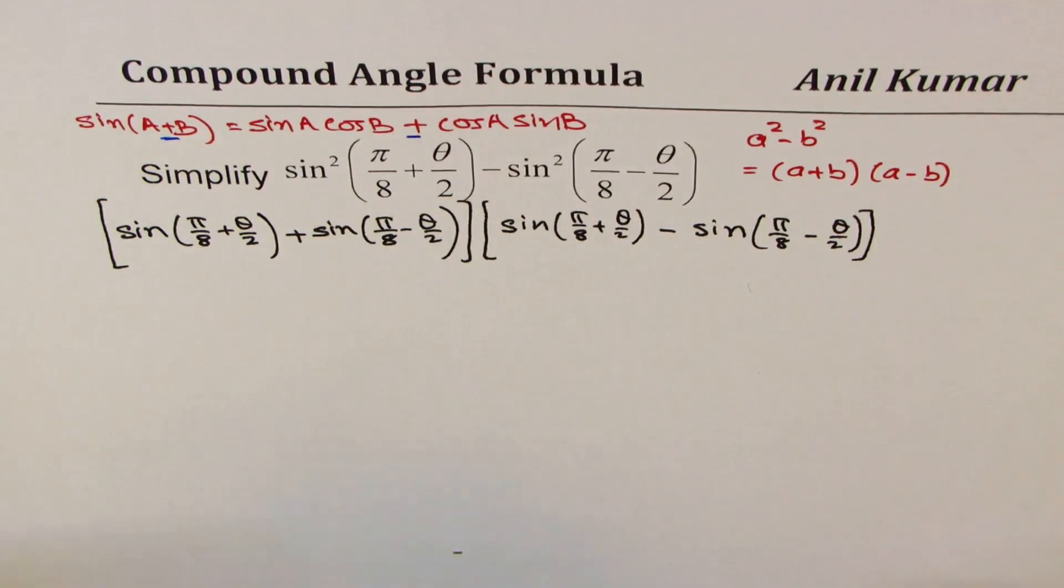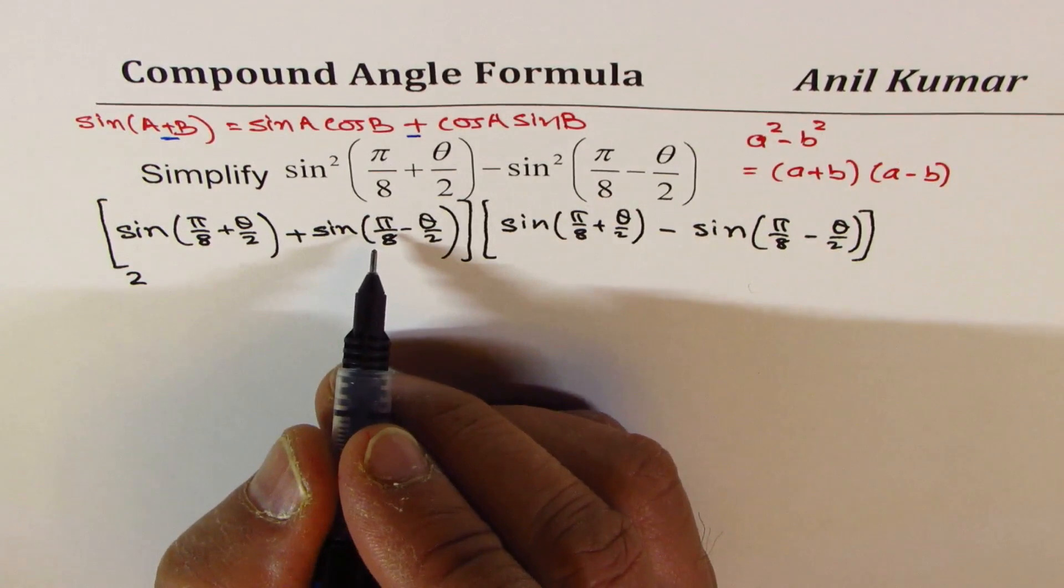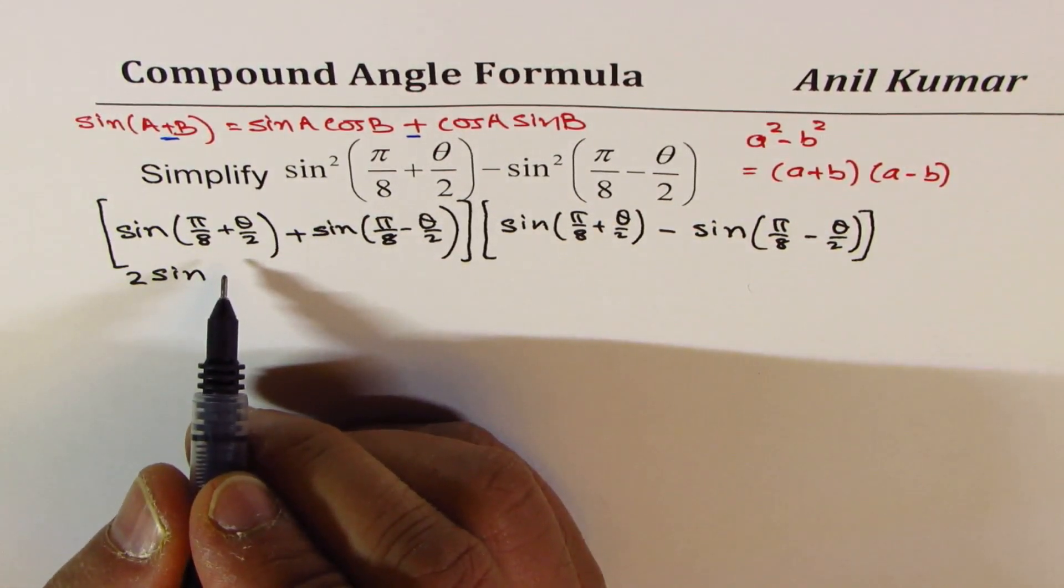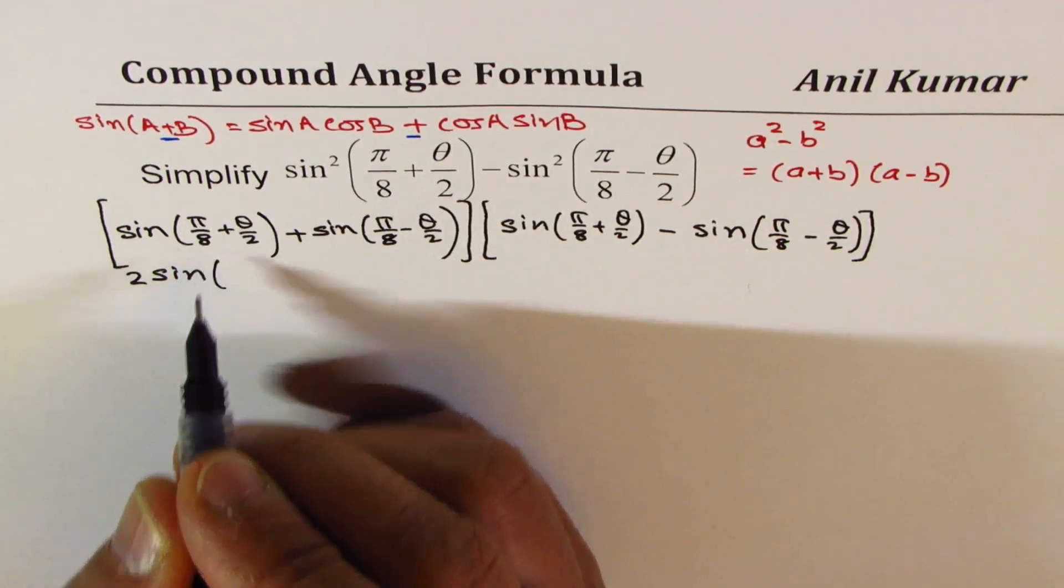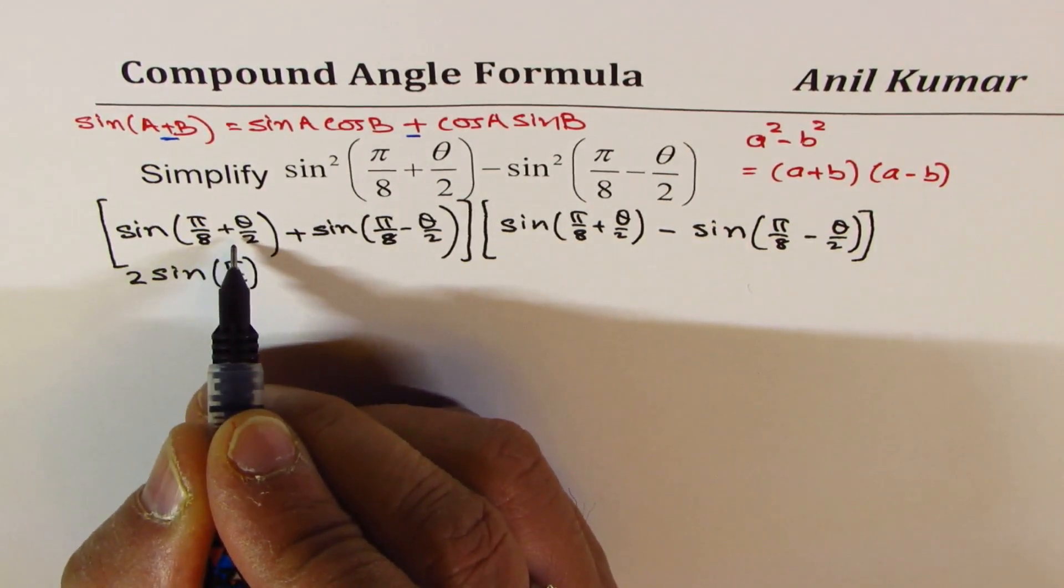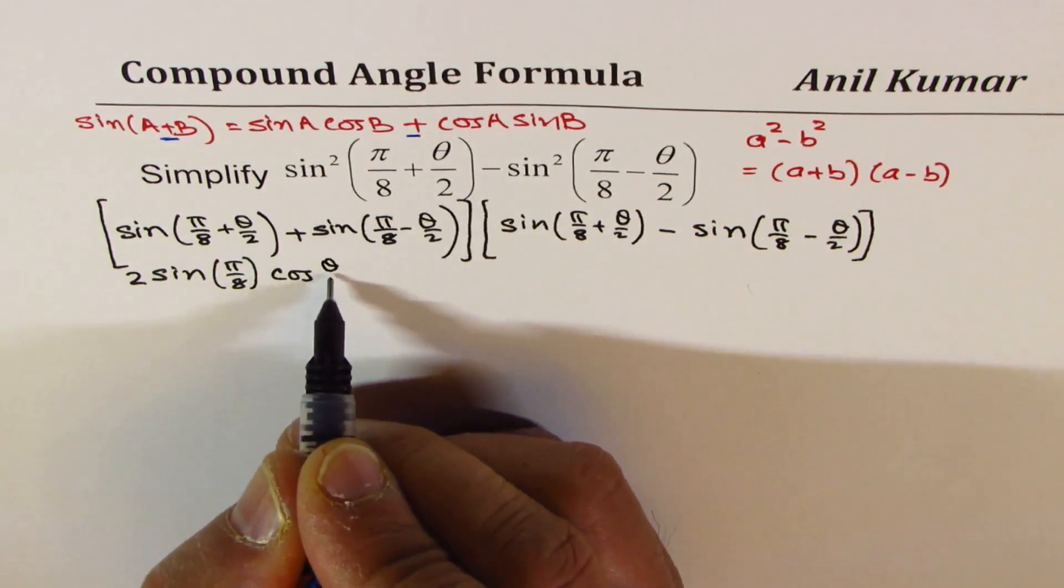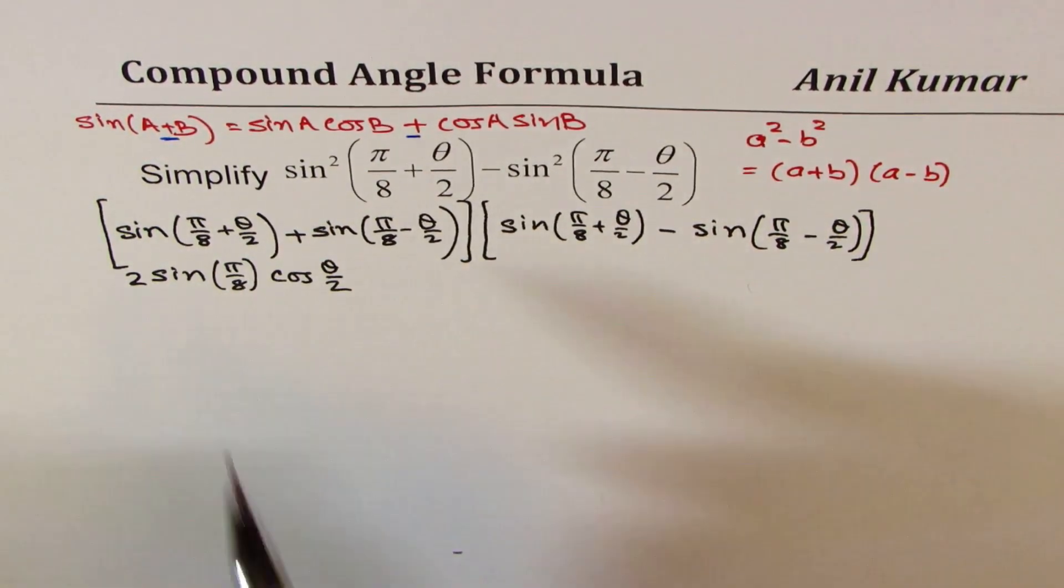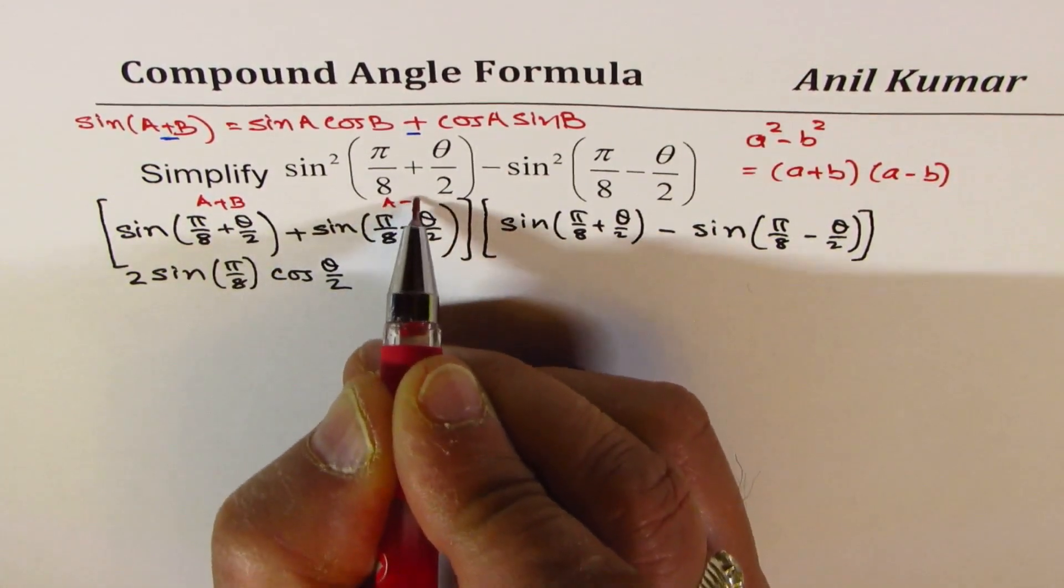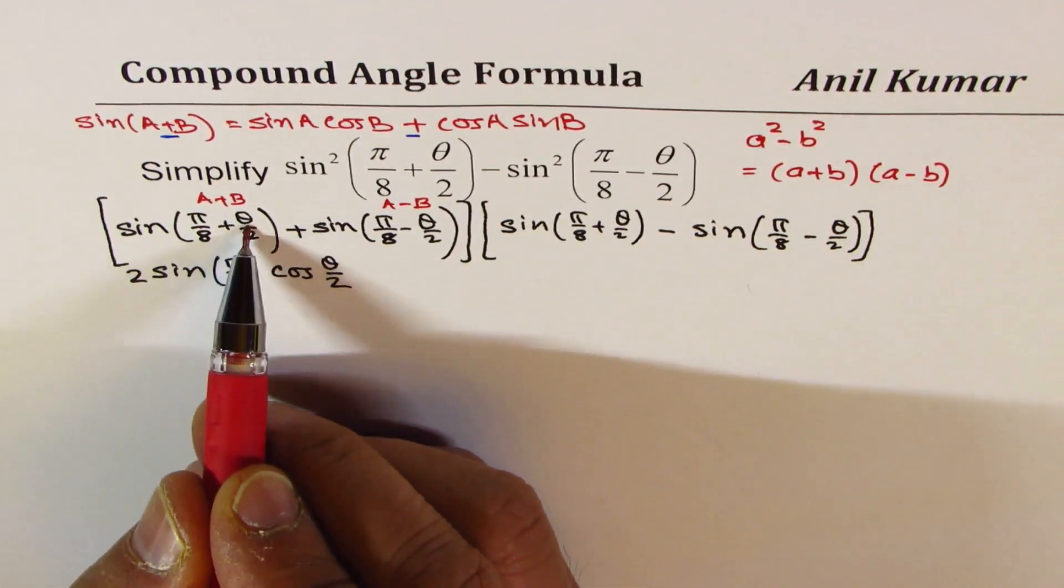So on this side, we'll get 2sin(a)cos(b). Sin(a) is the first term, which is π/8. So 2sin(π/8)cos(b). b is θ/2. So what we have done here is treat this as a+b and this is a-b. So what we get here is sin(a)cos(b), twice.